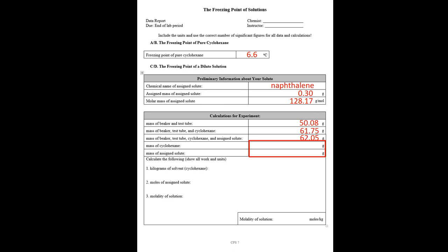After that, you can calculate the mass of cyclohexane and the mass of the assigned solute, naphthalene, by simple subtraction. Then you'll need to calculate the molality of the solution. The next slide will show you how to perform a sample calculation of molality, so if you need assistance it will run through a sample calculation.